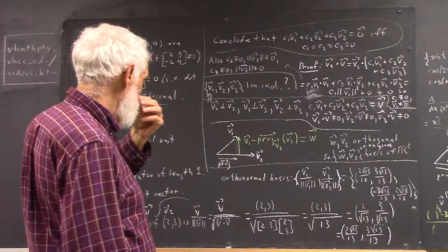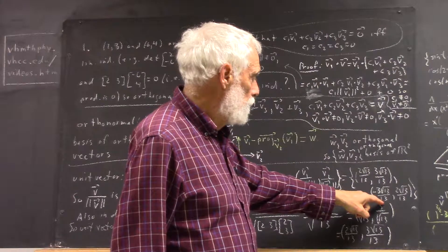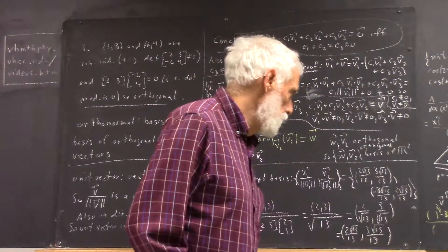Okay, so for (-6, 4), the vector would be -3√13/13 and 2√13/13.